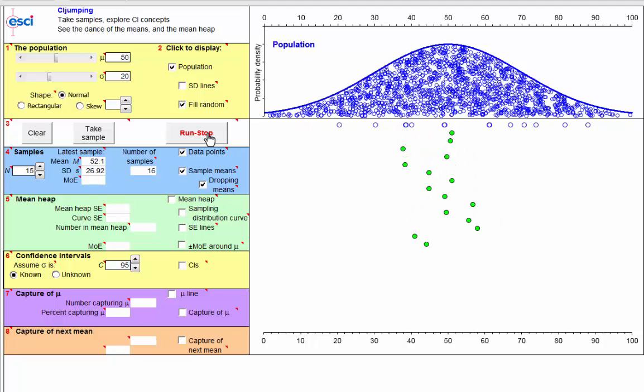This shows the extent to which sample means dance around as we take successive independent random samples of size 15 from this population. That is the dance of the mean. So play your choice of music on your computer, or act it out as you choose.